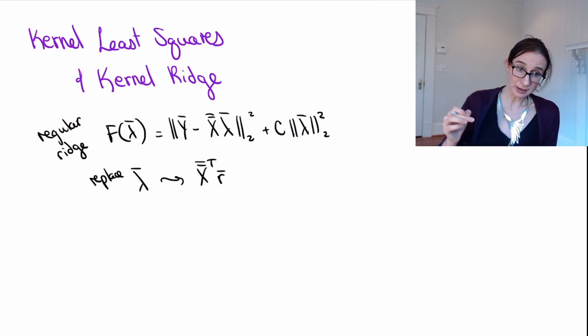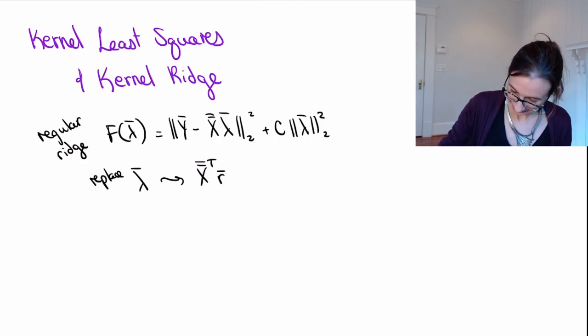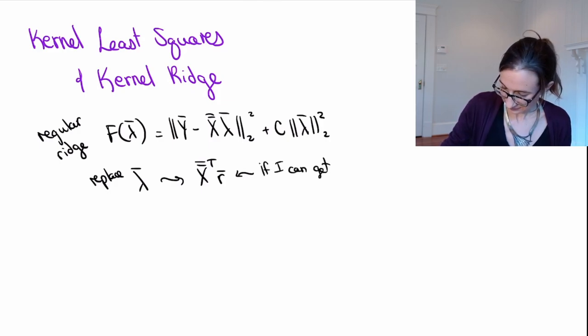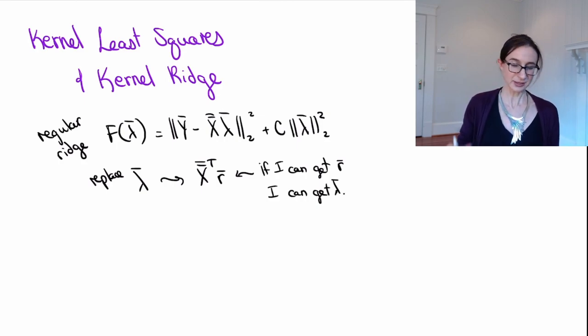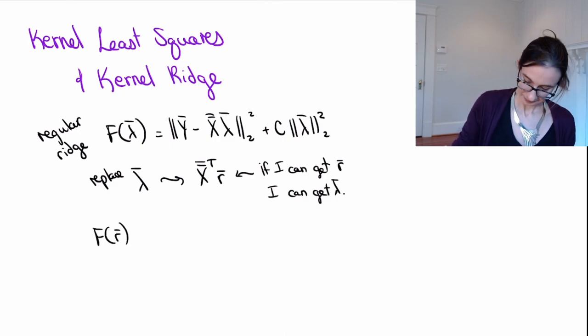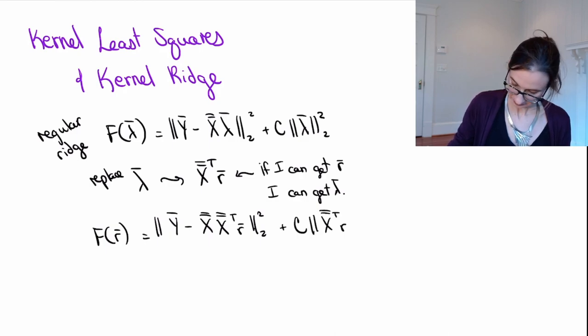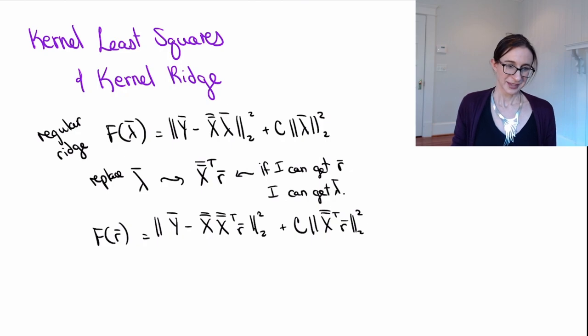And if we can get r, right, if we can minimize this objective in terms of r, then we can get back to lambda, because lambda is X transpose r. Okay, so let me just write that really quickly. Okay, so now my objective is in terms of r.